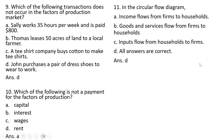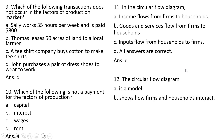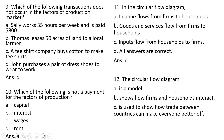Question 12: The circular flow diagram is a model — that is correct. It shows how firms and households interact — that is correct. It is used to show how trade between countries can make everyone better off — no, that is not correct. So answer choice D: A and B are the correct answers.